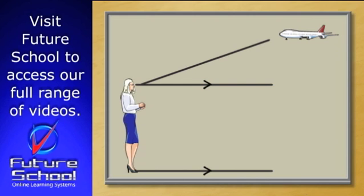Can you see that when I do this, I create an angle between my original line of sight, which was on a horizontal level, and my new line of sight to the plane? This angle is known as the angle of elevation because I had to lift up or elevate my eye in order to see the object.